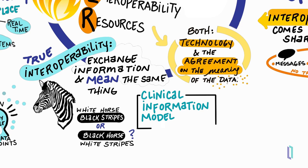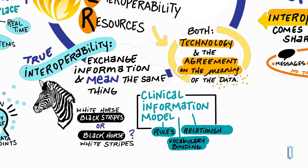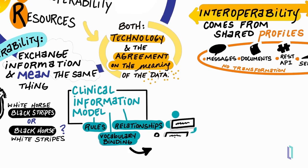To ensure that the same descriptions are used across systems in healthcare, a clinical information model must be used. This includes the descriptions of healthcare data concepts for a particular use case, rules of how the data is used, vocabulary or terminology bindings, and the relationships between data. A FHIR profile is the implementation of a clinical information model. To understand the importance of a profile, consider a patient's medical history report from an EHR system that you print out and cut into individual data elements. On one of these strips of paper is the phrase, diabetes type 2.